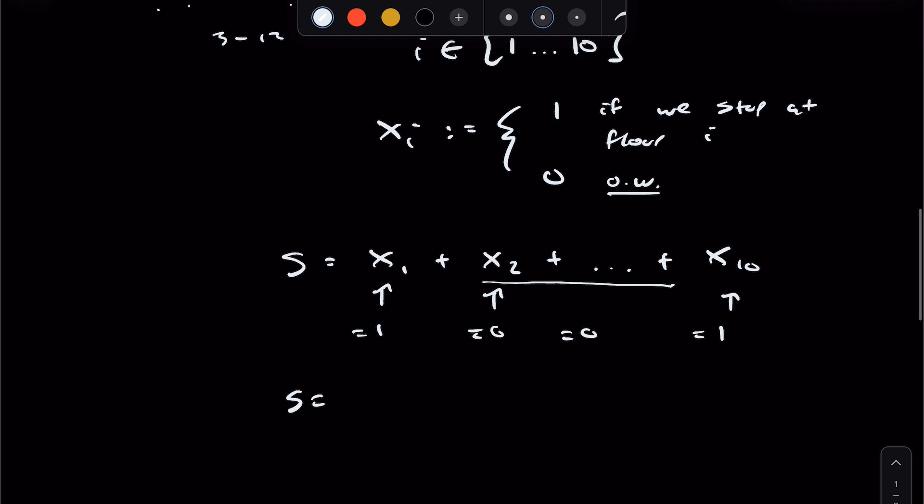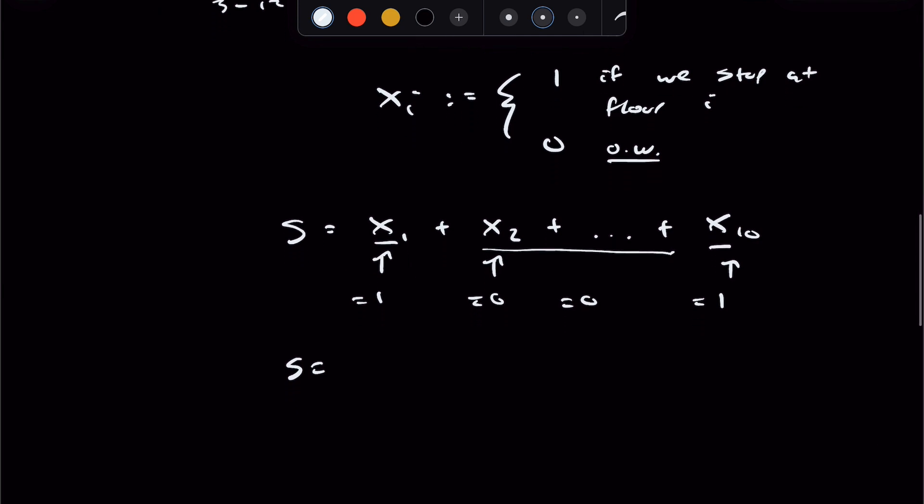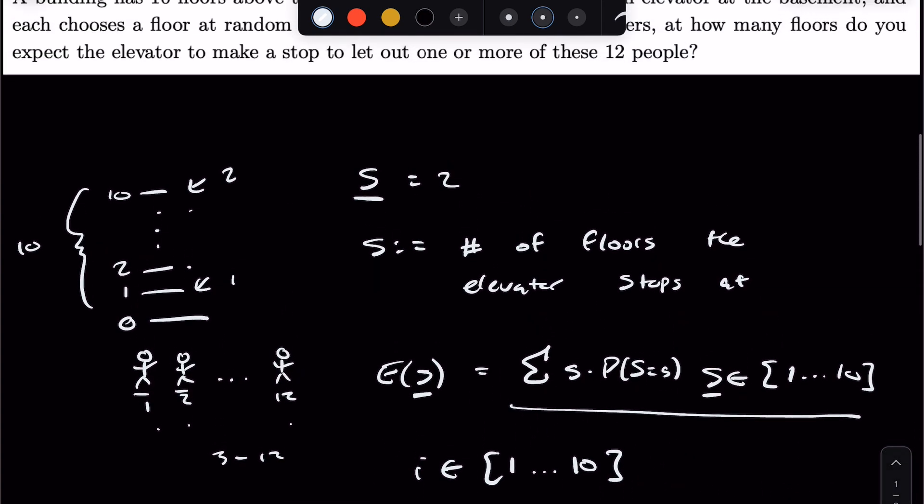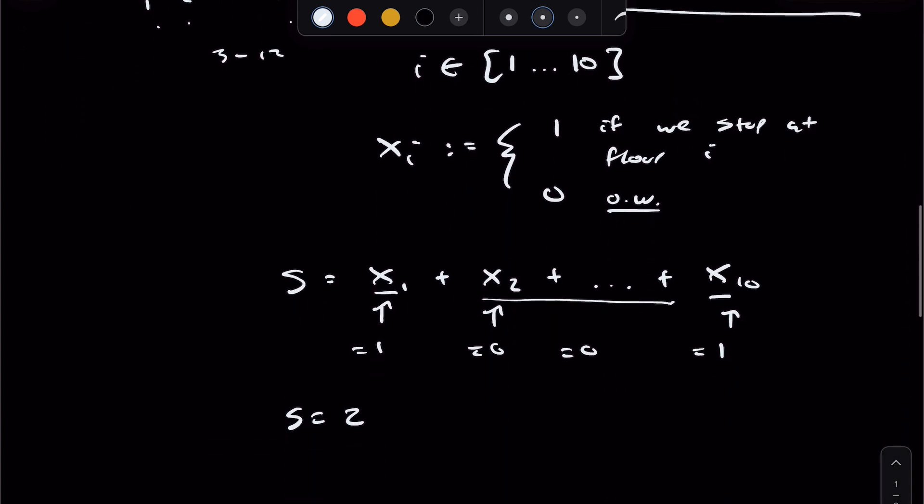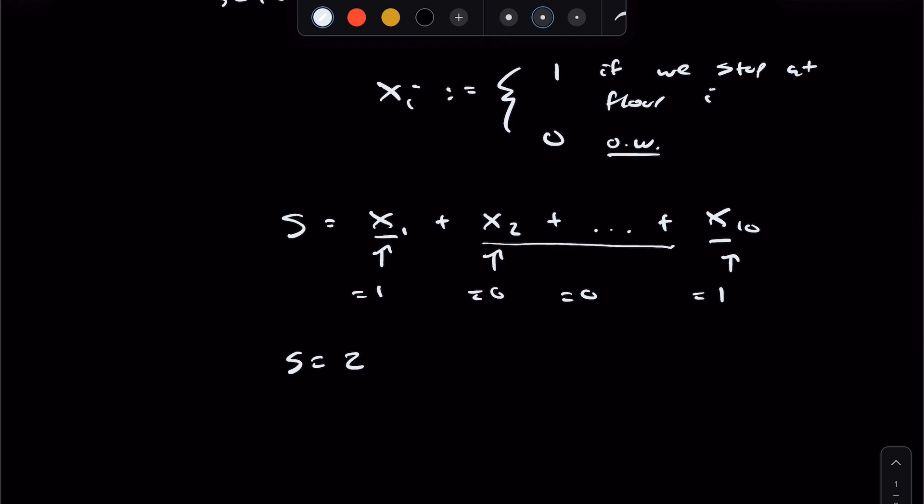The only floors that people get off at are the first and the tenth. And as a result, for those random variables, those indicator random variables take on value 1. And as we can see, the aggregate is exactly 2, just like we had seen that it should be based off of our initial example.